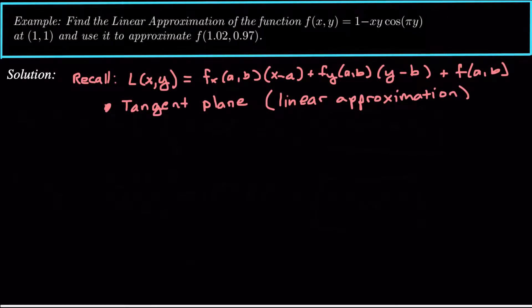What is the linear approximation? The linear approximation is the partial derivative of the function evaluated at the point (a,b), times x minus a, plus f_y — the partial derivative of f with respect to y — evaluated at (a,b) times y minus b, plus the function value f(a,b). So we need these three values: f_x at (a,b), f_y at (a,b), and f at (a,b). The linear approximation and the tangent plane equation are the same thing.